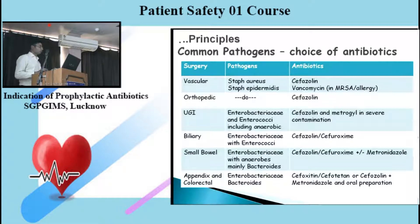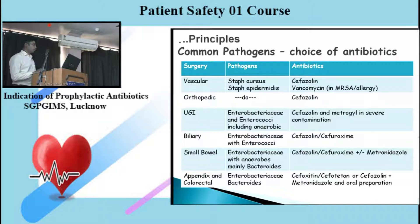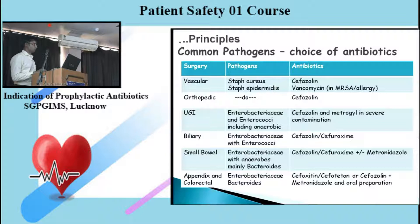For biliary and small bowel surgeries, Enterobacteriaceae with Enterococci are most common, with additional Bacteroides if small bowel is involved — cefazolin or cefuroxime is proposed, and metronidazole can be added for distal small bowel. For appendix and colorectal surgeries, Enterobacteriaceae and Bacteroides cause high anaerobic load, so cephalosporins with good anaerobic cover like cefoxitin or cefotetan are used, or cefazolin with metronidazole, in addition to oral preparation given at various centers.